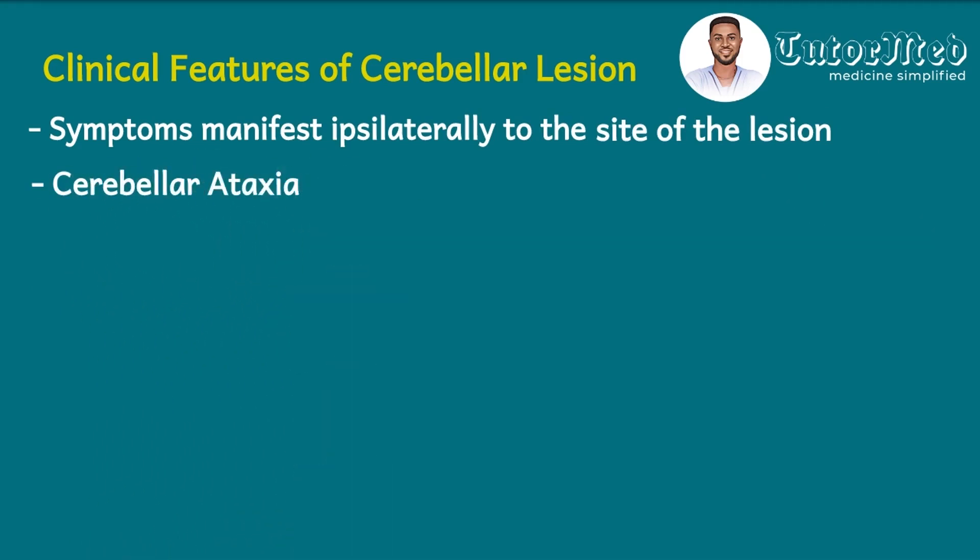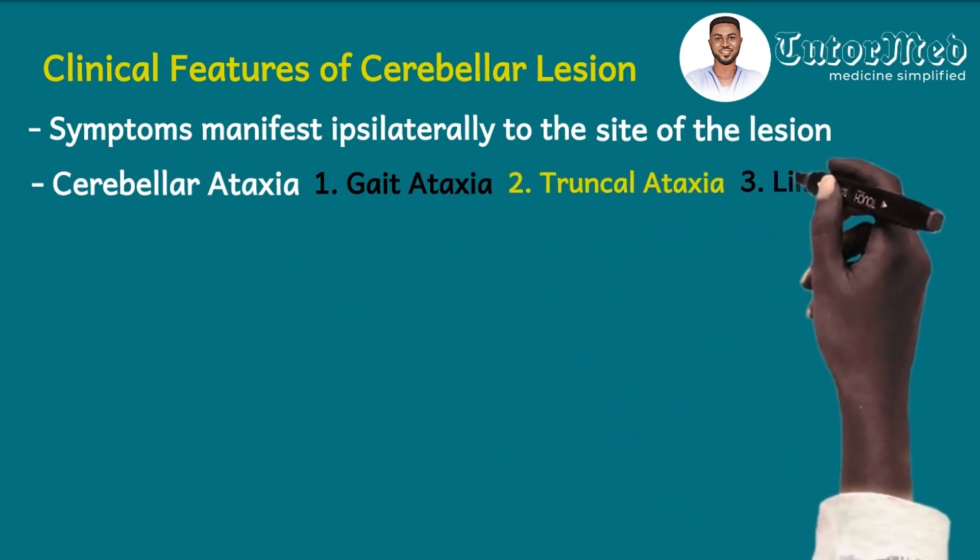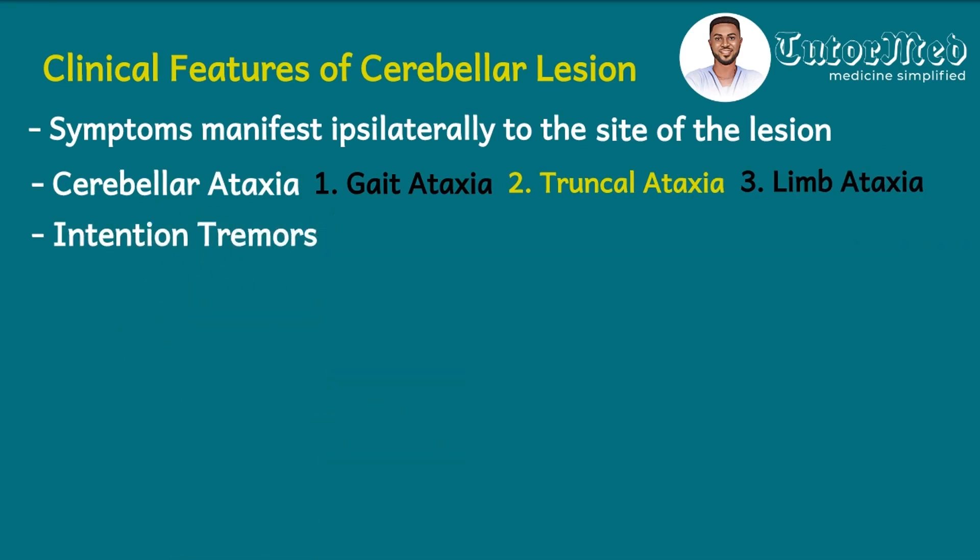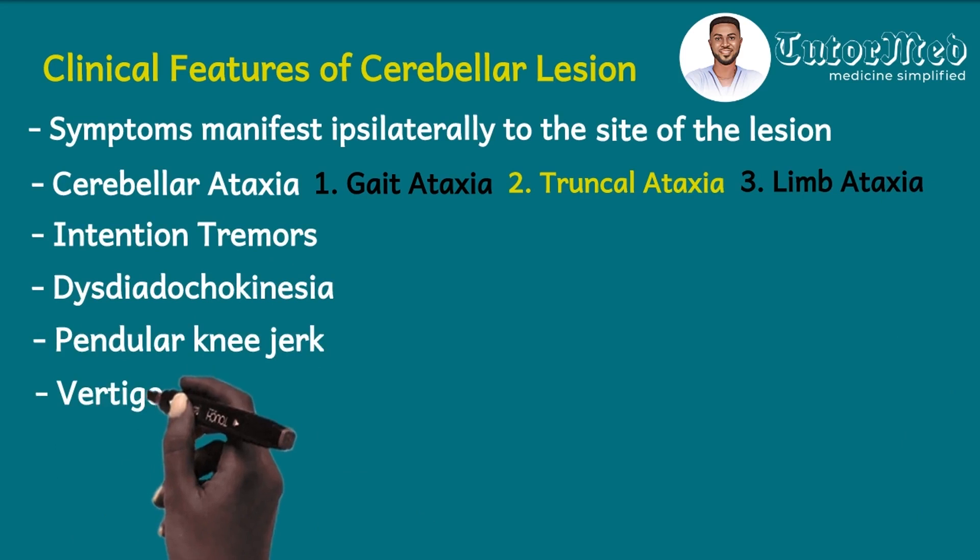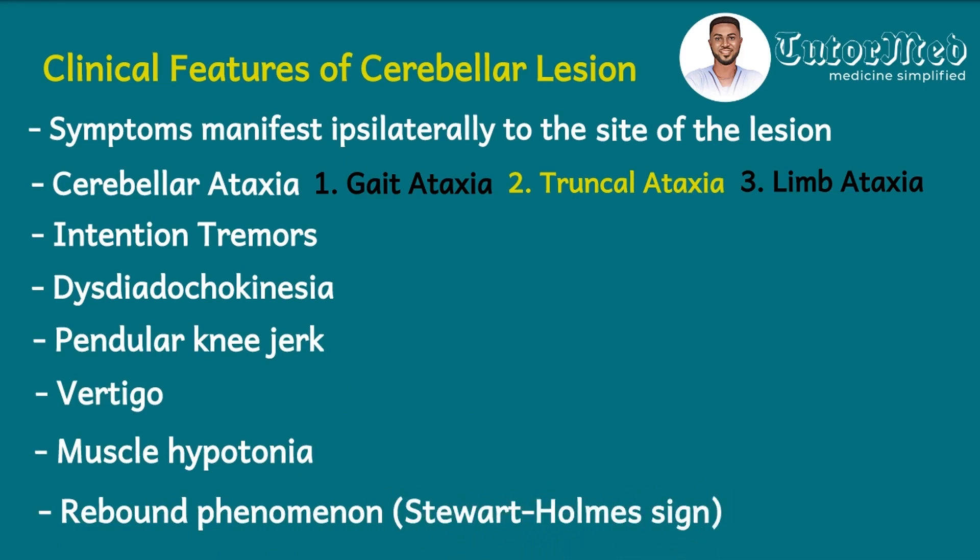So you open your reference texts and you go to clinical features of cerebellar lesions and then read. You'll see answers like: symptoms of cerebellar lesions manifest ipsilaterally, that is on the same side to the site of the lesion—write it in your exercise book. Then the next clinical feature: cerebellar ataxia, and for that we have three—gait ataxia, truncal ataxia, limb ataxia. Then we have intention tremors which featured in the question. We have desdiadochokinesia also featured in the question, then pendular knee jerk, vertigo, muscle hypotonia, rebound phenomenon also known as Stewart-Holmes sign. Write all these clinical features from your reference text into the exercise book you've got and then move on.